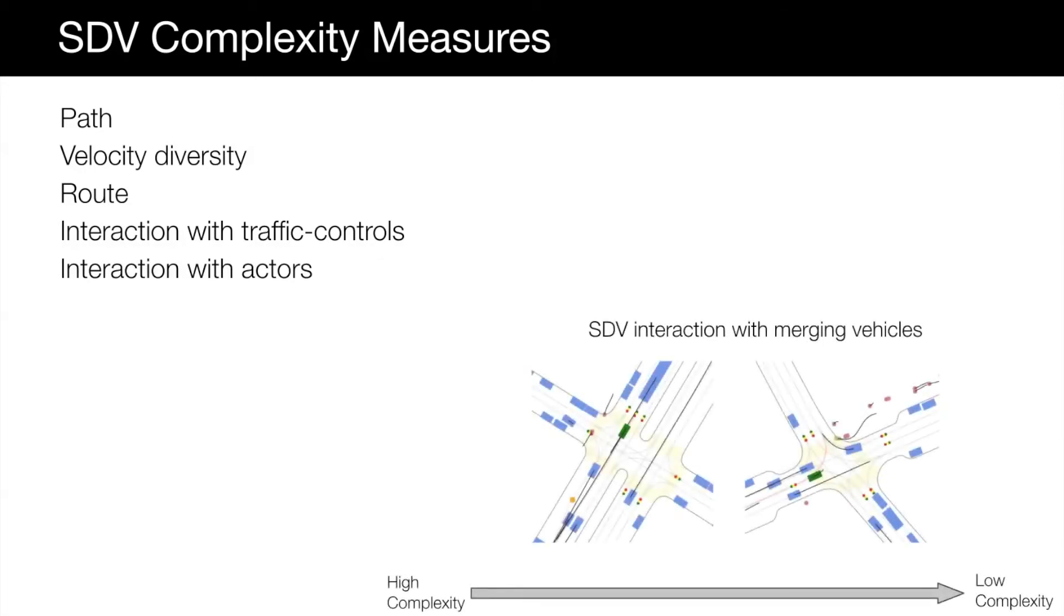On the bottom row, SDV interacts with another vehicle that is lane changing into its lane at high speed, making it a complex scenario. As opposed to the scene on the right, where ego car is stopped for the merging actor.